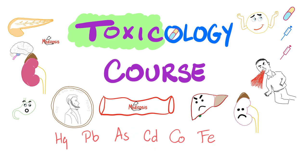You'll also cover sulfonylurea toxicity, carbon monoxide poisoning, cyanide poisoning, digoxin toxicity, theophylline toxicity, beta blocker overdose — and why you give glucagon as an antidote for beta blocker toxicity. You will learn about cocaine, amphetamines, selective serotonin reuptake inhibitors, and tricyclic antidepressants.